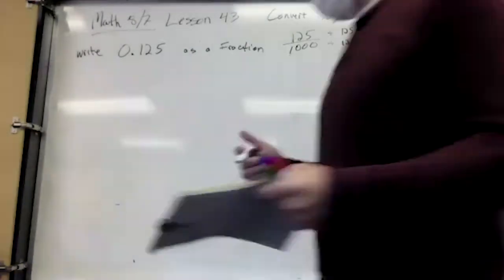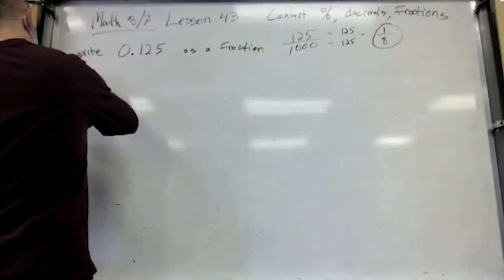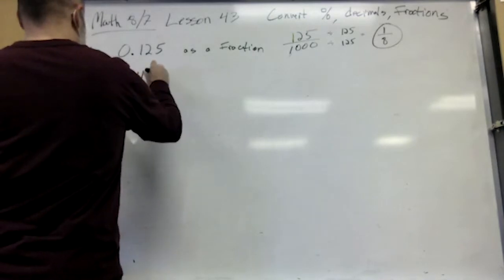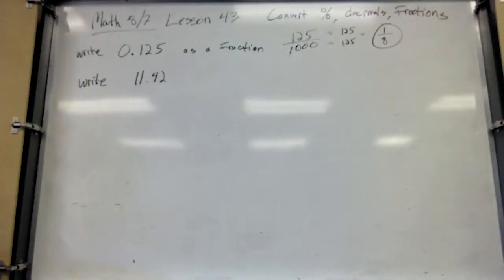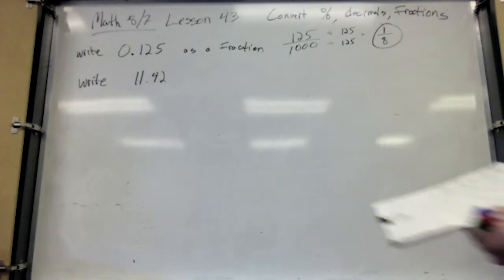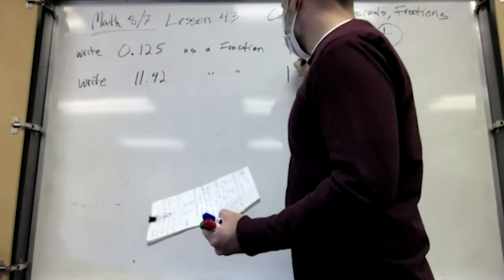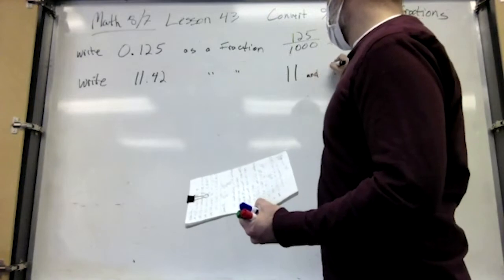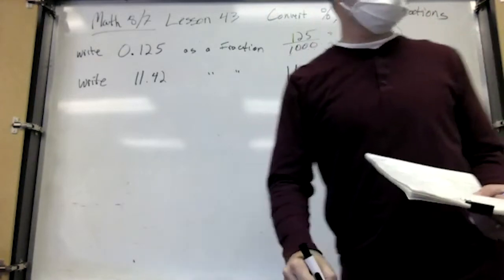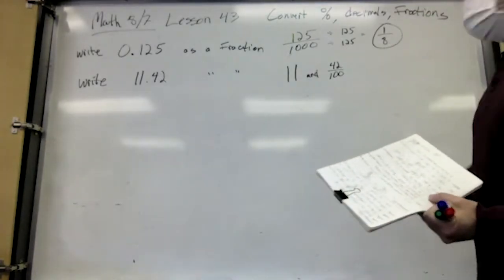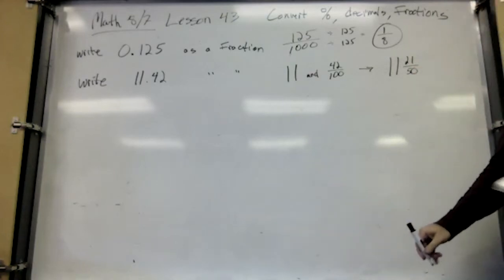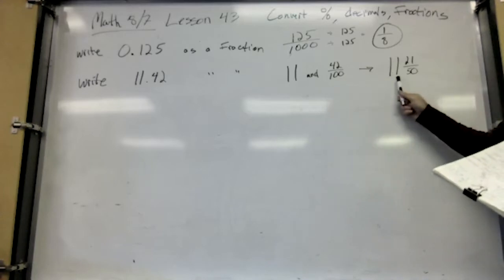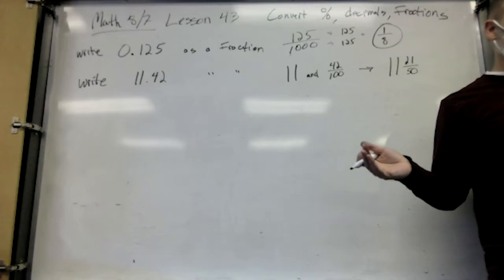Let's try something a little bit more difficult — writing this as a mixed number. How do you say this number? Eleven and forty-two hundredths. Can you reduce forty-two hundredths? Yeah, they're both even numbers — cut them both in half. You get eleven and twenty-one fiftieths. When you say 'and' in a mixed number, that's just writing the fraction right next to the whole number.